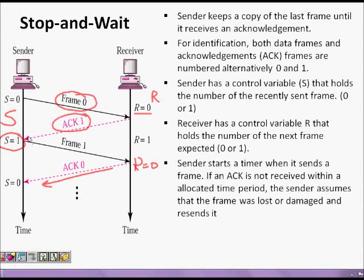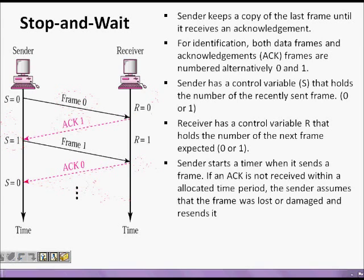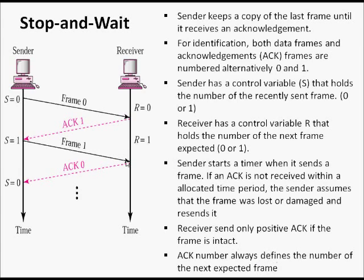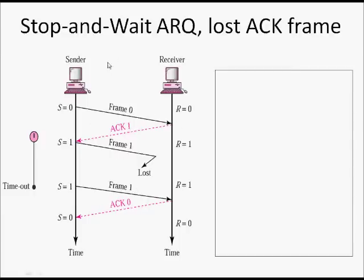If a frame is sent and there is a packet error, the receiver does not receive it and no acknowledgement comes. In both cases — lost frame or lost ACK — the sender must retransmit. That's why we have a timeout mechanism. The receiver sends only a positive ACK and never a negative ACK. The ACK number always defines the next expected frame.